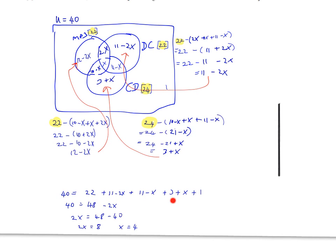Then we simply add the like terms here until we get 48 minus 2x. Then we want to bring the 2x over here to make it plus 2x and bring the 40 over here. In the end, you end up with x equals 4.